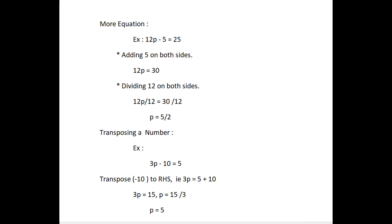Next, to solve the equations, 12p minus 5 equal to 25. First, adding 5 on both sides. Then, we get 12p equal to 30. Next, dividing 12 on both sides. Then, we get the value of p equal to 5 by 2.